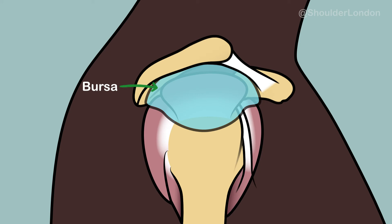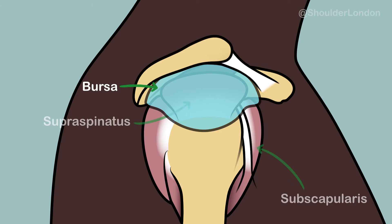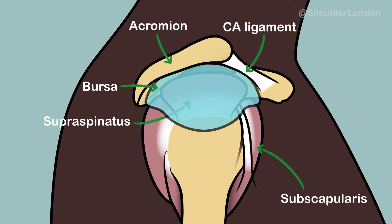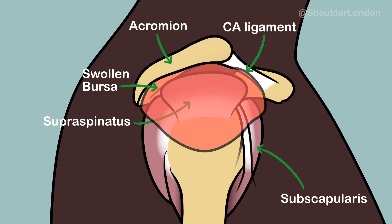The subacromial bursa is a normal structure in the shoulder that exists between the rotator cuff tendons and the acromion above. The bursa helps the tendons glide under the acromion, but in some patients the bursa can become inflamed and thickened, and this can cause pain.